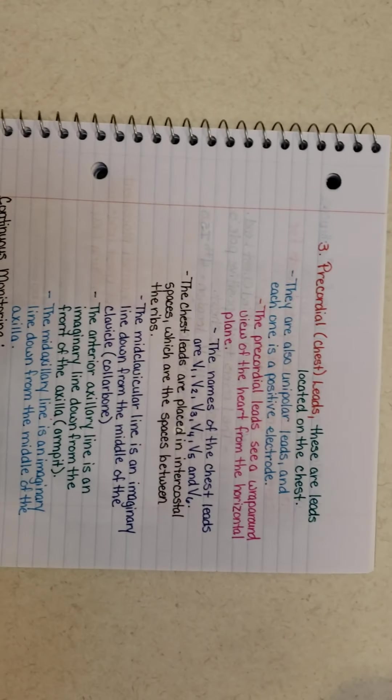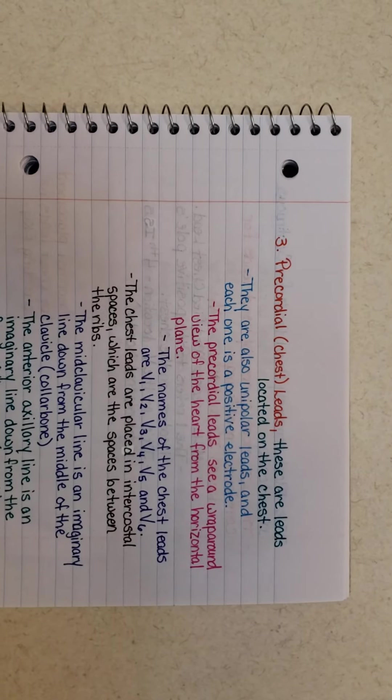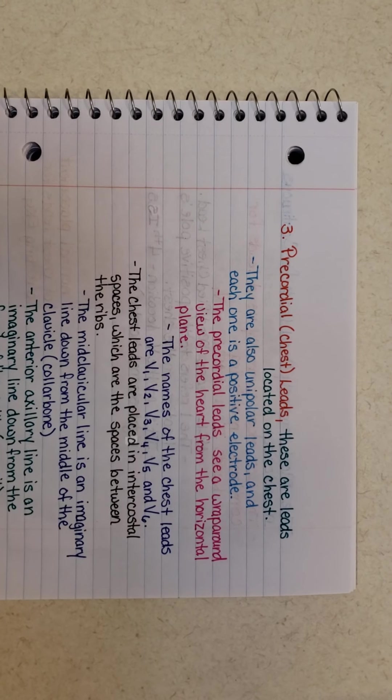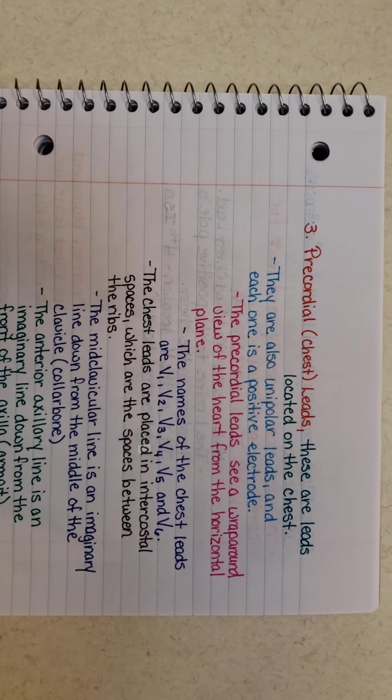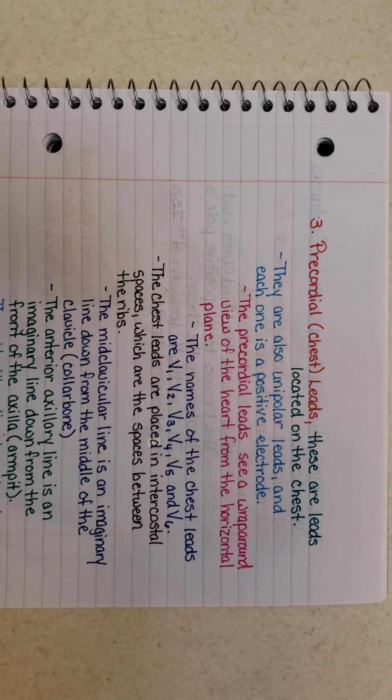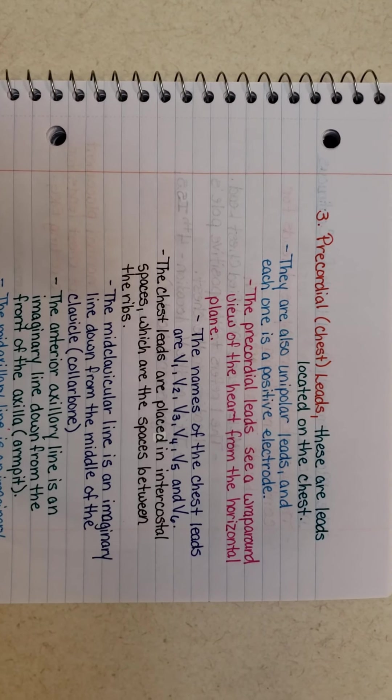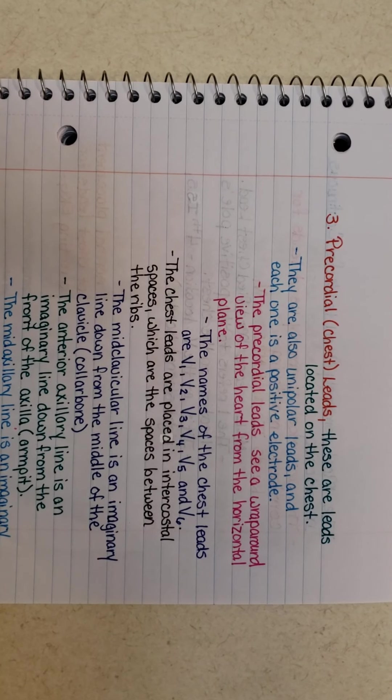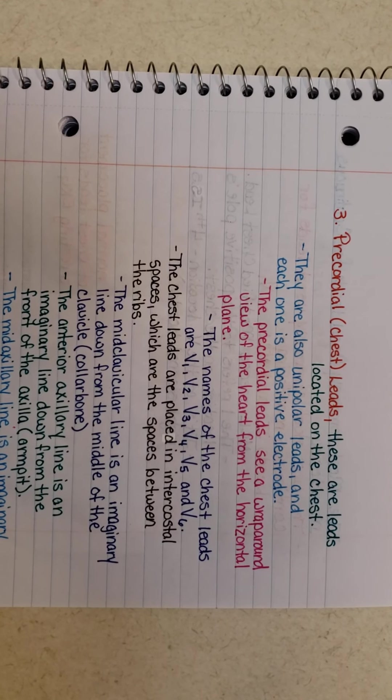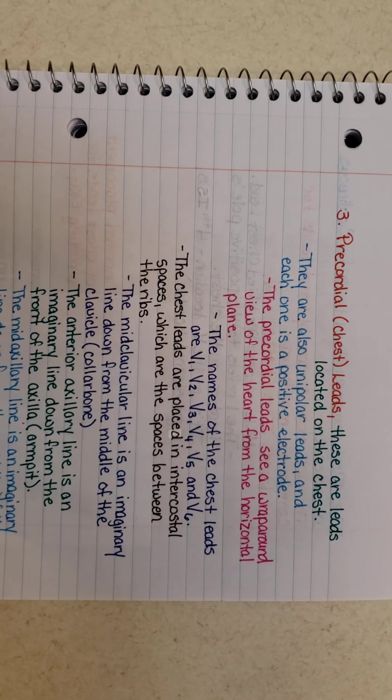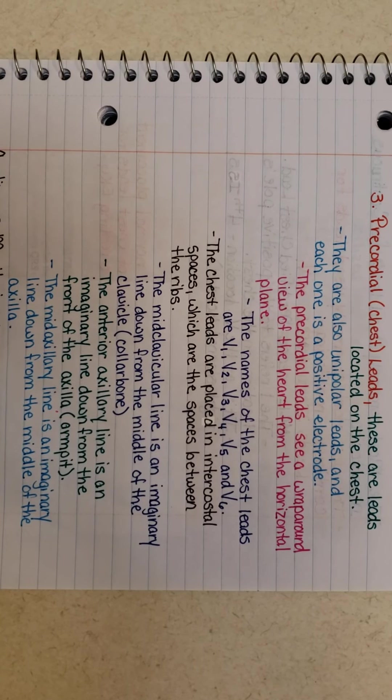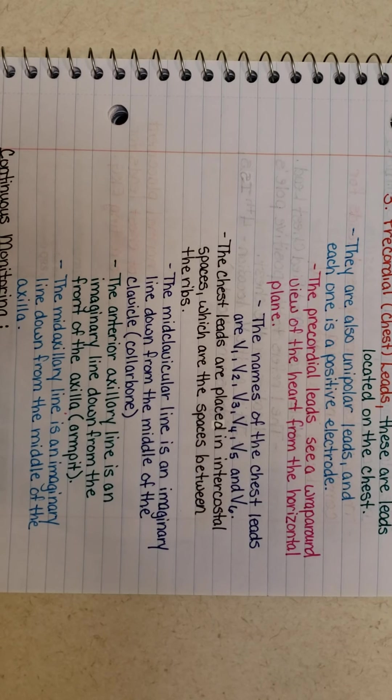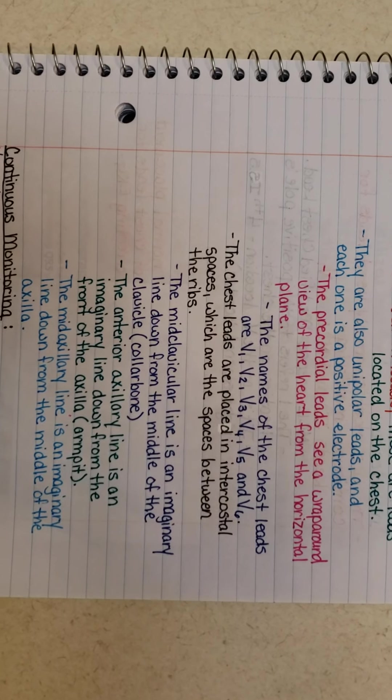The last leads we're going to talk about is precordial leads or chest leads. These are leads located on the chest. There are also unipolar leads, and each one is a positive electrode. The precordial leads see a wrap around view of the heart from the horizontal plane. The name of the chest leads are V1, V2, V3, V4, V5, and V6.